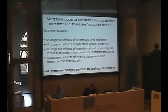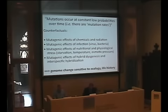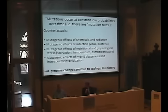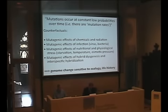Then there's the statement that mutations occur at constant low probabilities over time — that this mutation rate, which is a mathematical convenience for population geneticists, is a real phenomenon. But of course, every experiment where you measure the frequency of mutants depends upon what's happened to the test organisms. We have the mutagenic effects of chemicals and radiation, of infection by viruses or bacteria, of nutritional and physiological stresses — starvation, temperature, osmotic pressure, high salt, the list goes on.